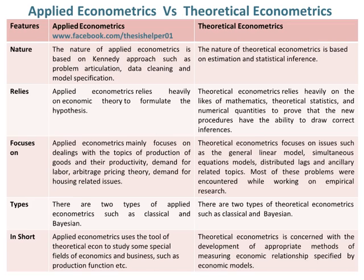Applied Econometrics relies heavily on economic theory to formulate the hypothesis. Whereas, theoretical econometrics relies heavily on mathematics, theoretical statistics, and numerical quantities to prove that the new procedures have the ability to draw correct inferences.